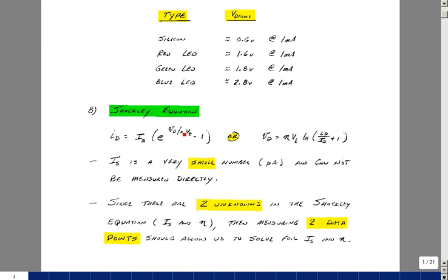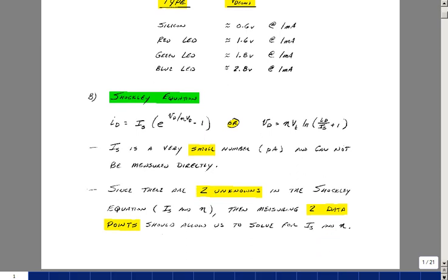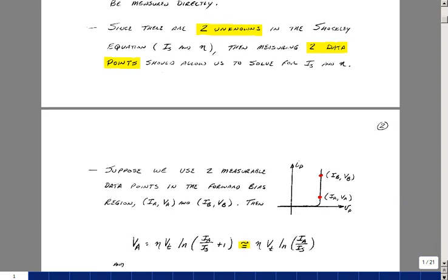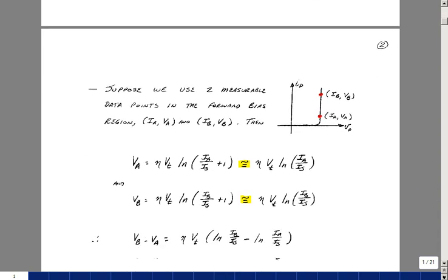How are we going to determine these constants of I sub s and eta, because I need those to be able to have this equation so I can evaluate it. Well there's two unknowns, so I would need two data points to solve for it.